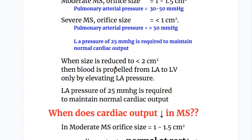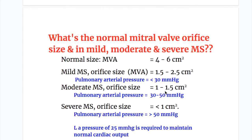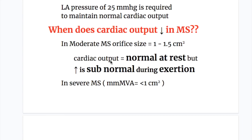When the size is reduced to less than 2 cm², blood is propelled from the left atrium to the left ventricle only by elevating the left atrial pressure. In moderate mitral stenosis, when the size is 1 to 1.5 cm², cardiac output is normal at rest, but the increase is subnormal during exertion.